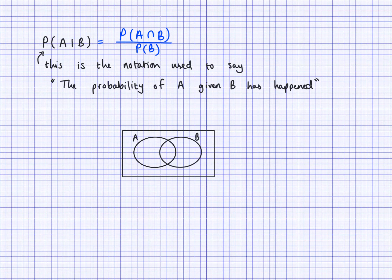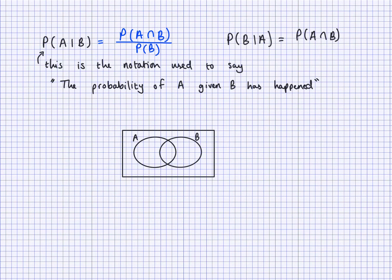If I had written probability of B given A instead, this would be probability of A and B — I don't need to say B and A because that's the same thing. I could also say probability of B intersection A; it wouldn't make a difference. But this time the denominator would be probability of A, because we're looking for probability of B given A has happened.